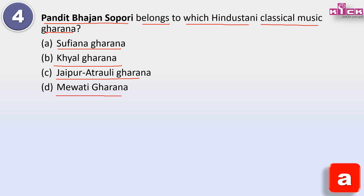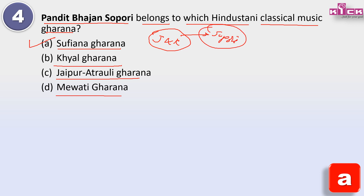Answer is Sufyana Gharana. Friends, Sufyana Gharana belongs to Jammu and Kashmir - it is from Kashmir. This Gharana is specifically associated with the Sopori family and has been continuing for many generations.